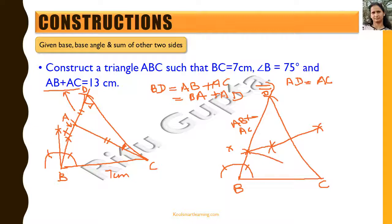We join O and C. Since the perpendicular bisector of DC means the midpoint Y satisfies YD equals YC, and OY is the common segment, the two triangles are congruent. This means angle ODC equals angle DCO, and OD equals OC. Therefore, point O is nothing but point A that we were looking for, and triangle ABC is the required triangle.